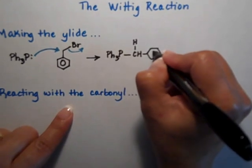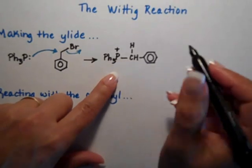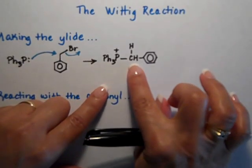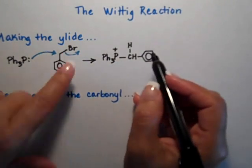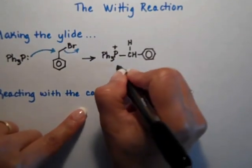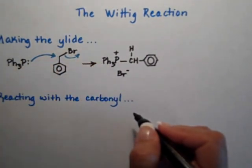The phosphorus right here has a positive charge. So we need a counter ion. But the carbon is not negative yet. So the carbon is not my counter ion. I have a bromine. So the bromine is going to be the counter ion right now for my positive phosphorus.